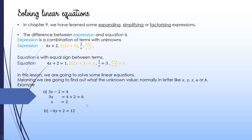For example b: if we have negative 4y plus 2 equal to 12, we want to get rid of the positive 2, so we bring it to the other side as minus 2. That gives us negative 4y equal to 10. We divide by negative 4, and the answer is negative 5 over 2. The negative sign can be placed in the middle, on the 5, or on the 2.